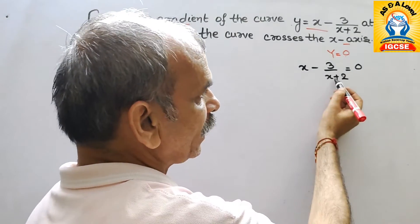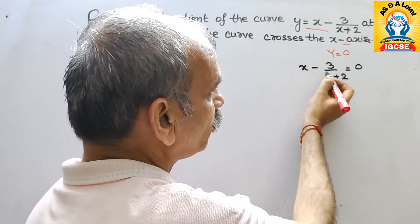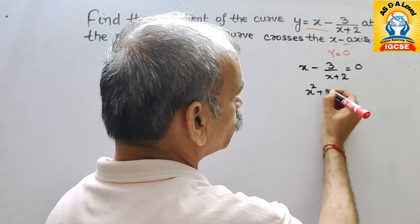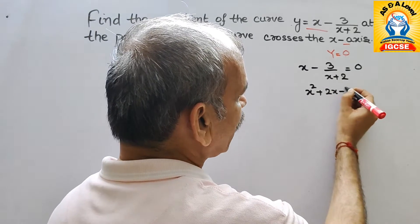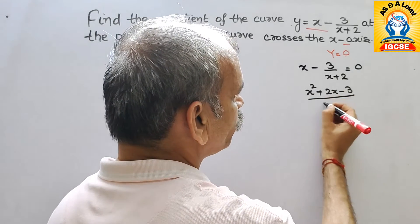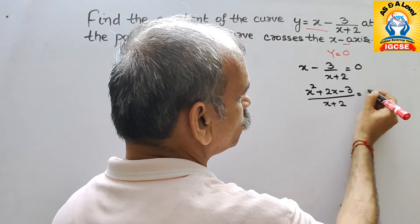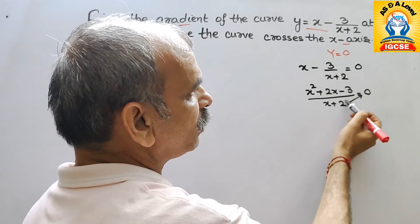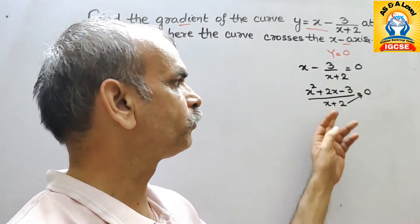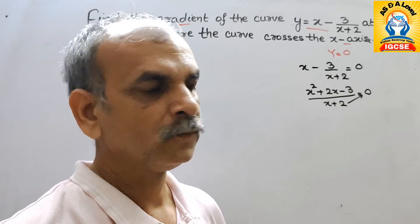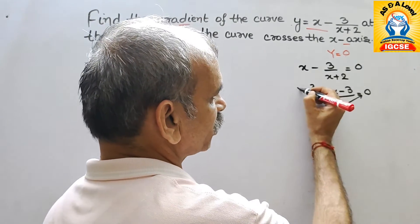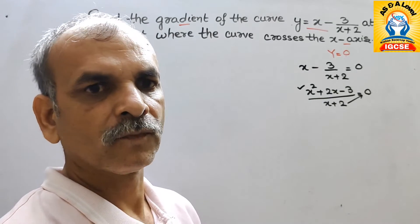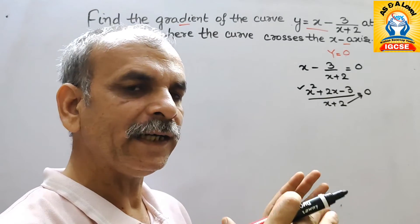Take the LCM as (x+2). It becomes x(x+2) - 3 over (x+2), which equals 0. After cross multiplication, the denominator cancels and we get: x² + 2x - 3 = 0. Now we go for middle term splitting.